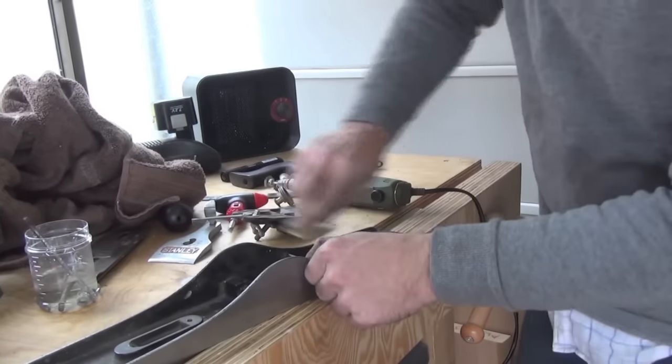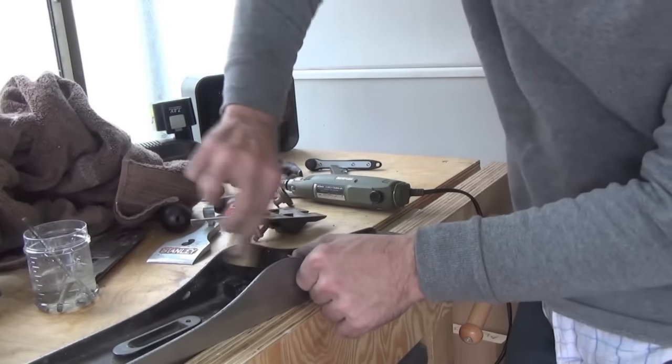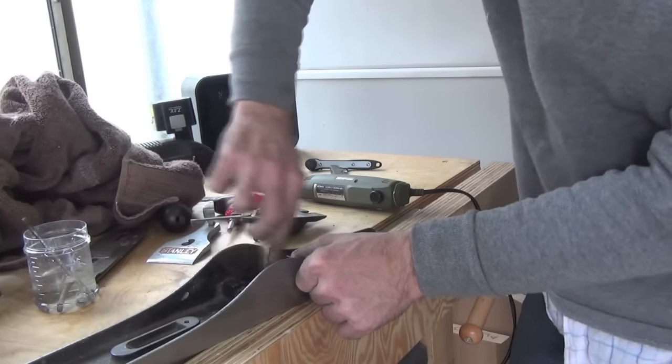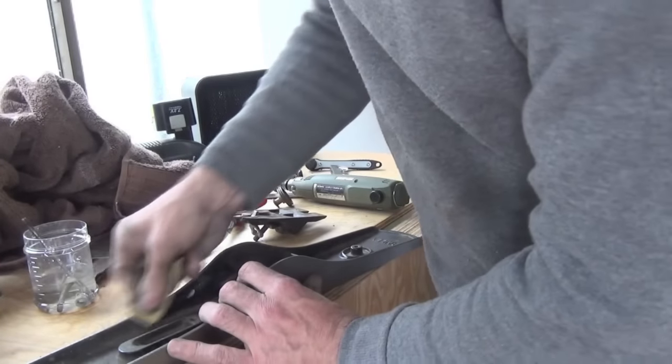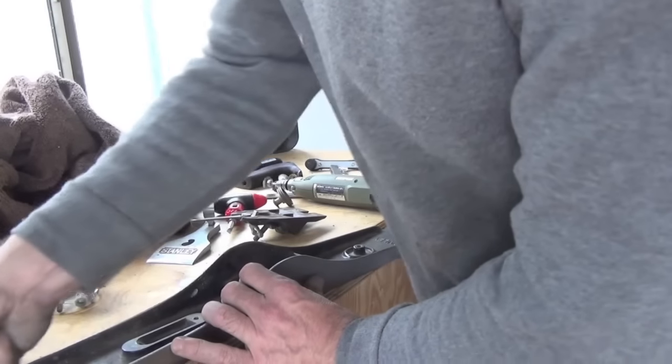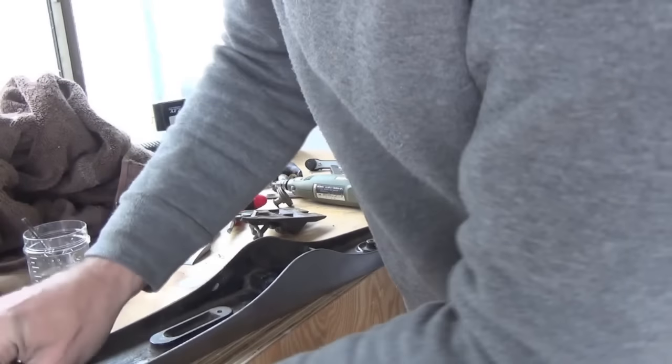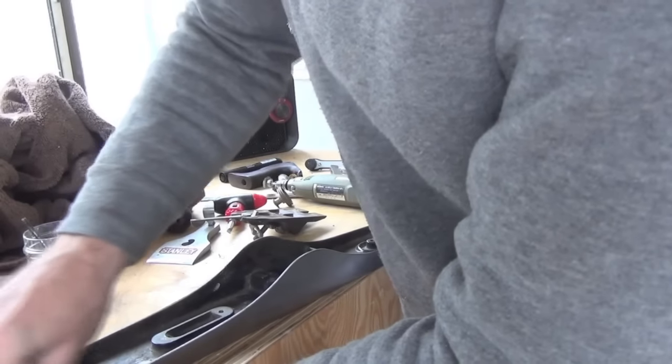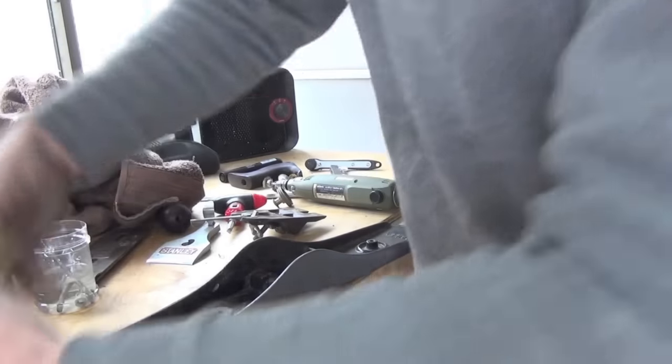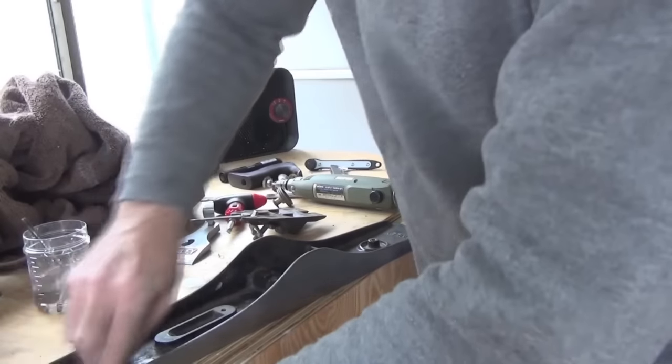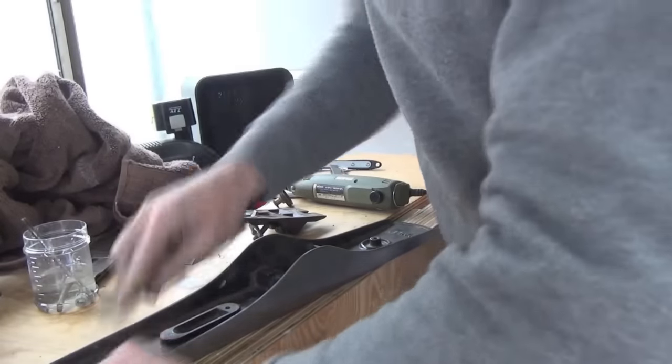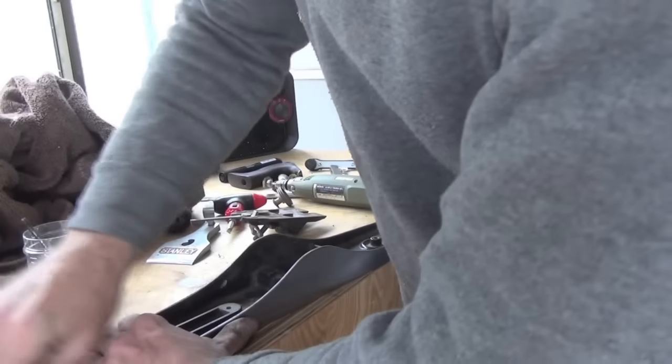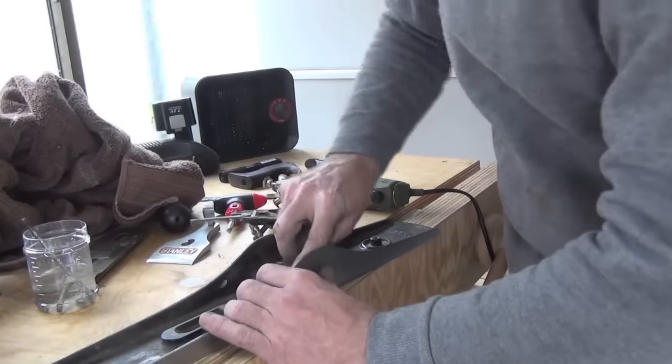Now I'm sanding any exposed areas, edges such as the edges of the plane, because I'm going to touch this up with lacquer. If I were wanting to restore this plane so it looked absolutely brand new, I'd strip the entire plane down and repaint. But that's not what I want to do. I simply want to restore this to usable condition.